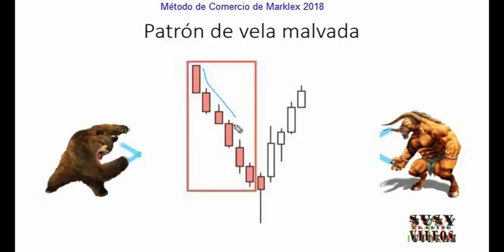¿Cómo vamos a describir una tendencia anterior? Con una serie de cuatro o más velas que se mueven en la misma dirección. Veamos aquí: ¿cuántas velas tenemos? Una, dos, tres, cuatro, cinco, seis. Aquí tenemos seis velas, entonces la podemos marcar como una tendencia. La tendencia anterior es importante porque demuestra que los toros o los osos están actualmente en el poder.